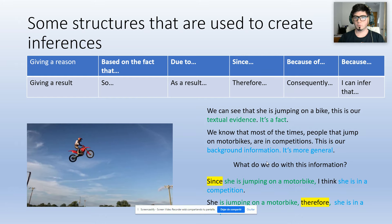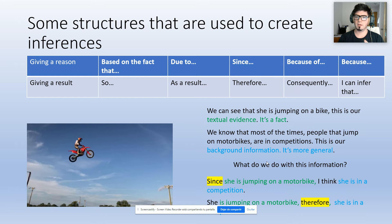What do we do with this information? I gave you two examples. First: since she is jumping on a motorbike, I think she is in a competition. Please pay attention to the word 'since' — this is our word to give a reason. Then we have 'she is jumping on a motorbike,' which is our textual evidence, what we can see. And then 'I think she is in a competition,' which is our background information. Another example: she is jumping on a motorbike; therefore, she is in a competition. In this example I use the word 'therefore,' which is our word to give a result.